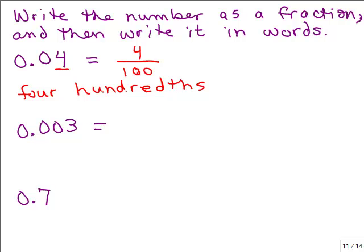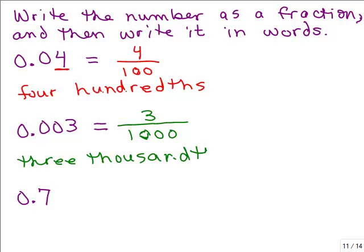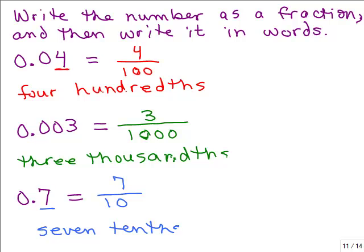Let's do the next one. For 0.003, I only have the digit 3, and it's in the third place after the decimal, so it's 1 with three zeros in the denominator — that's thousandths. So I'd write 3 over 1,000 and say "three thousandths." For 0.7, there's only one place after the decimal, so it's over 10 — "seven tenths." Notice in all of these you always put THS: tenths, hundredths, thousandths. Don't confuse those with 10, 100, and 1,000.